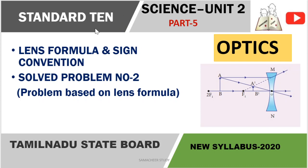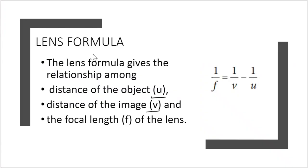In the lens formula, we will solve problem number 2 to see how to use the lens formula. The lens formula relates the distance of the object, distance of the image, and focal length of the lens. The standard lens formula is: 1 divided by f equals 1 divided by v minus 1 divided by u.